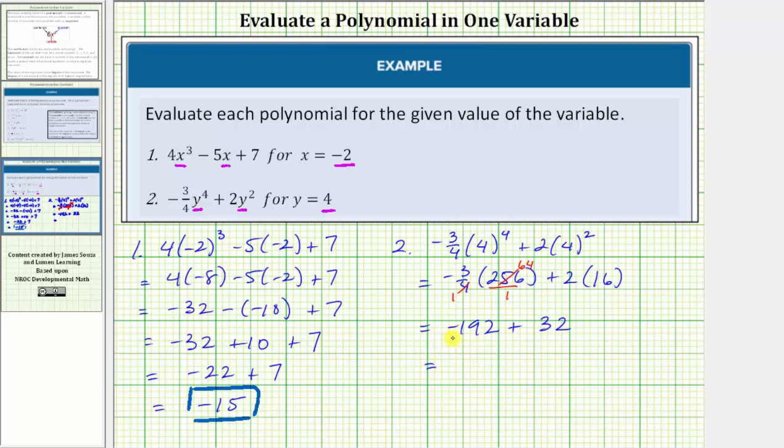And finally, negative 192 plus 32 is equal to negative 160. I hope you found this helpful.